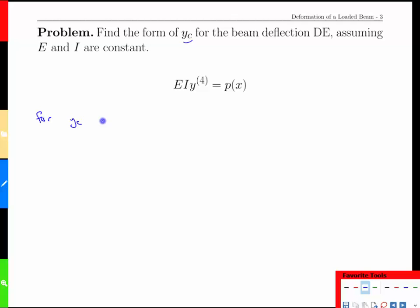Well, for the complementary solution, we're simply solving EI y to the 4, fourth derivative equals 0. Again, replacing the right-hand side with its non-homogeneous equivalent, a corresponding non-homogeneous equation. With that in mind, how would we go about solving that?